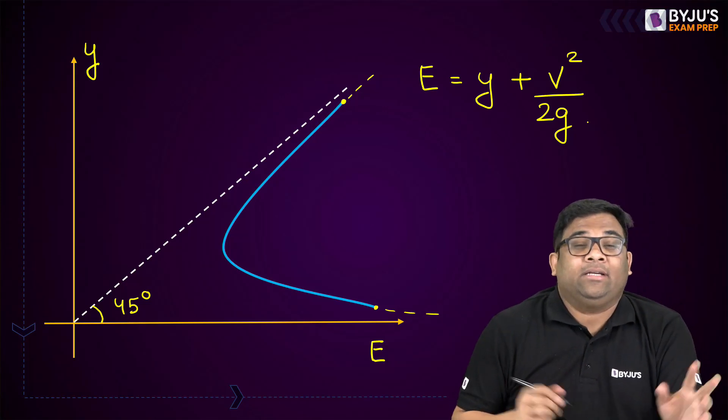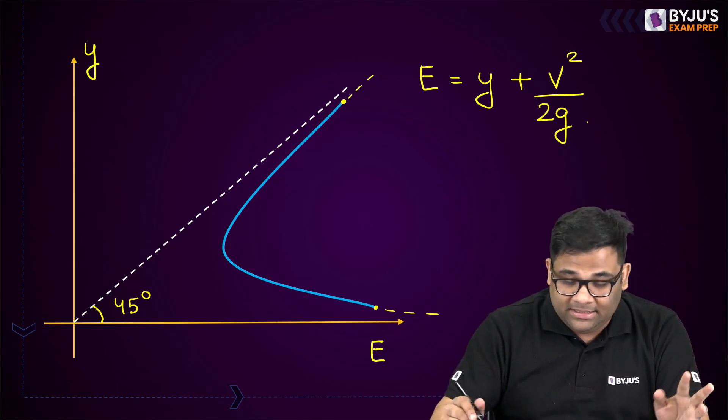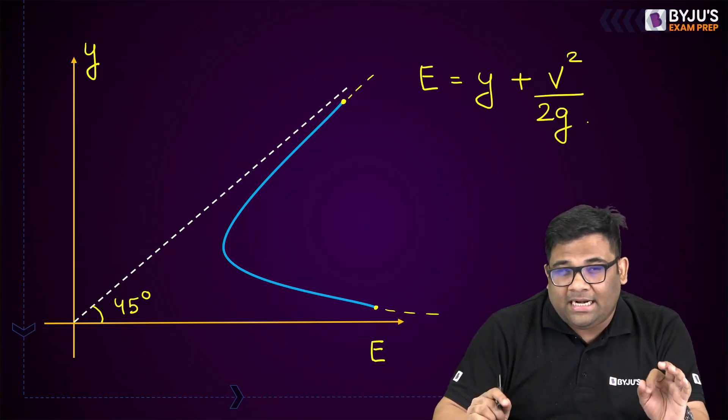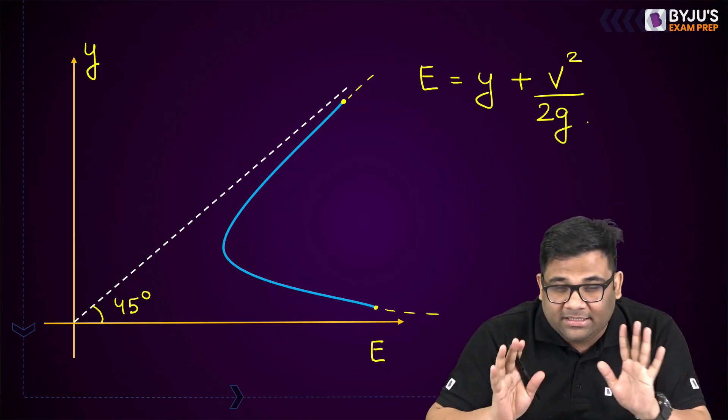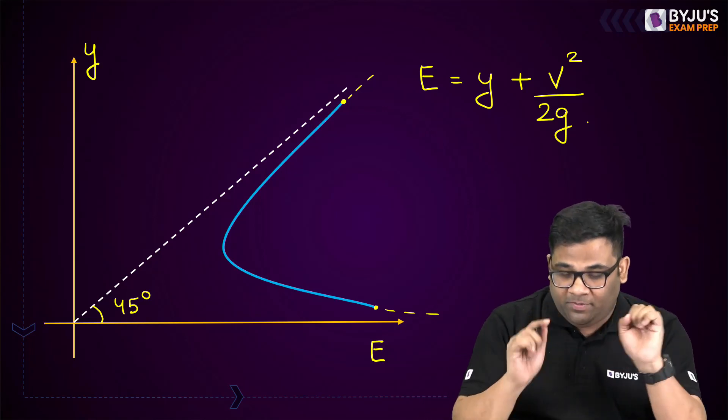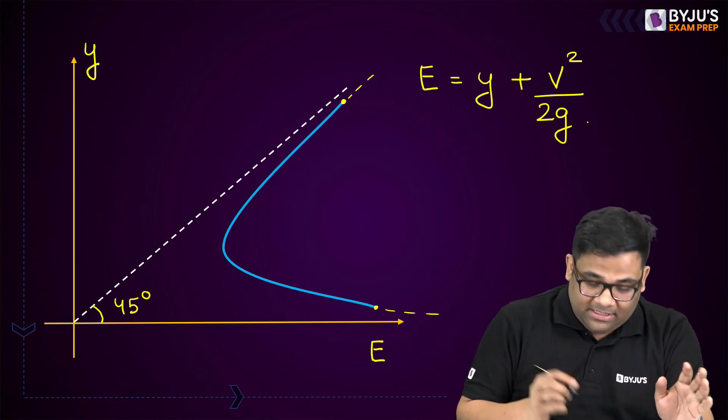This plot is asymptote to an imaginary line which is at 45 degrees to the X axis. In this plot there are various observations — what are the observations of this specific energy plot?